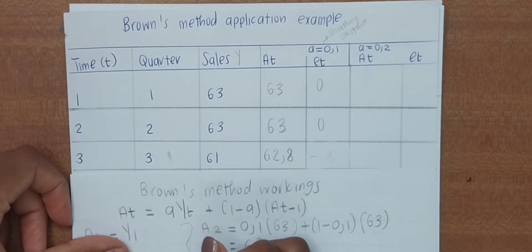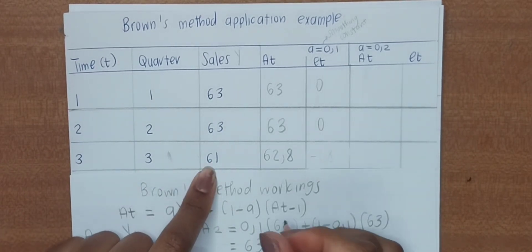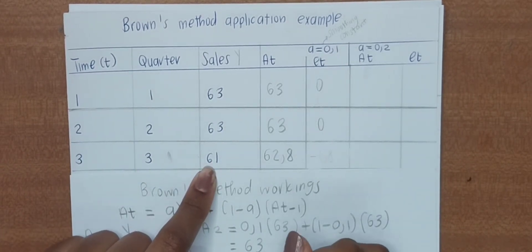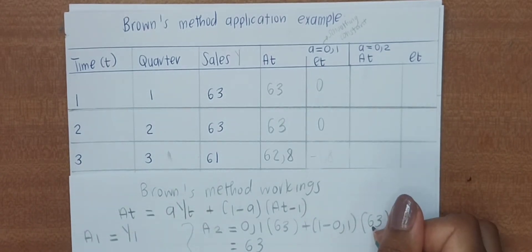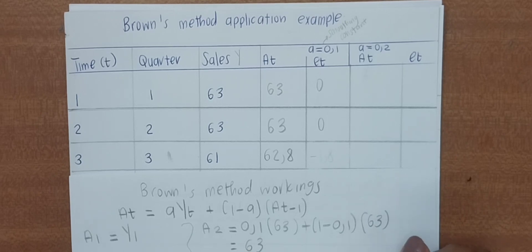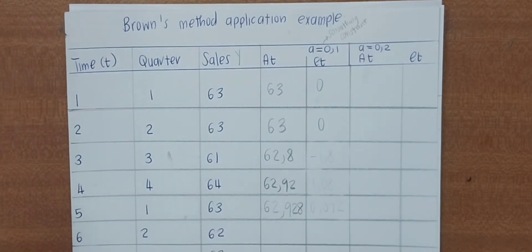A_3 is equal to 0.1 times the Y value that corresponds to A_3, which is 61, plus (1 minus 0.1) times the previous A, which is 63, and you will get 62.8. You do the same for the rest.